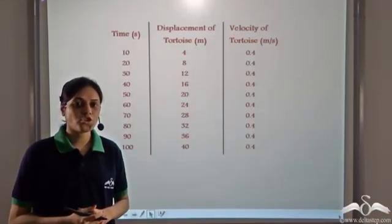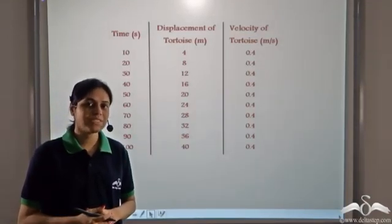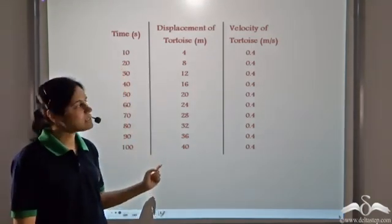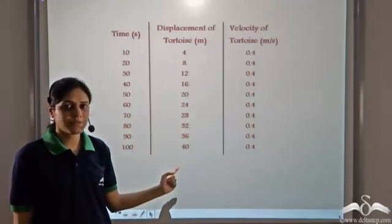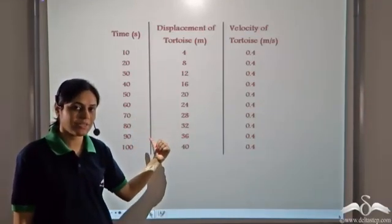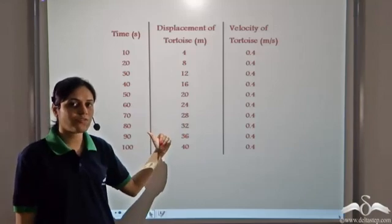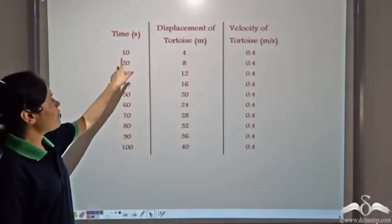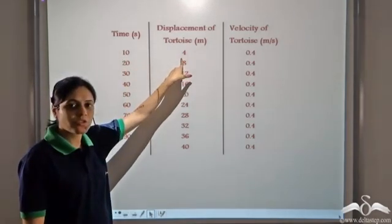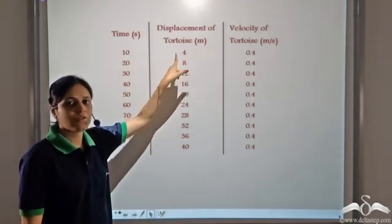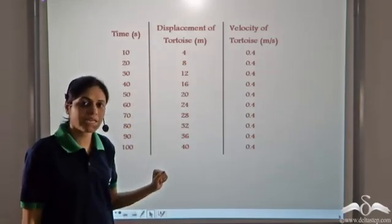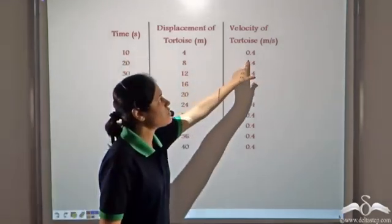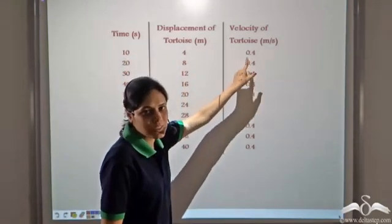The tortoise was slow but steady. This is the time taken by the tortoise and this is the displacement of the tortoise corresponding to these time periods. Let us see what was his velocity throughout the course of the race. After ten seconds, displacement of the tortoise was four metres. Velocity is displacement by time, so four metres divided by ten seconds gives us 0.4 metres per second.